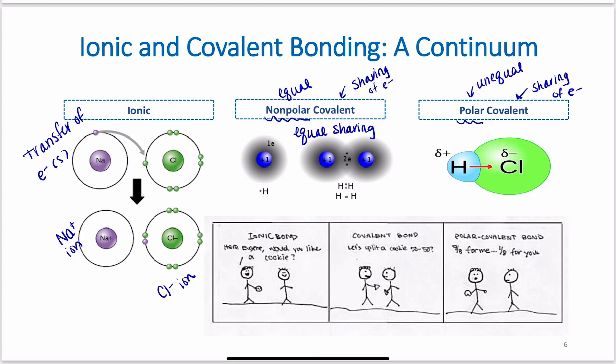We could have non-polar covalent. Non-polar covalent is equal sharing. Non-polar means equal. Covalent means sharing. And polar covalent is unequal sharing of electrons. In the case of H2, the diatomic, they equally share their electrons. There's no reason for them not to. They have the same pull on the electrons. But if I have something like HCl, it is a molecular compound. They are sharing electrons, but they're not sharing them nicely. Chlorine is pulling the electron density more towards itself. So an unequal sharing of electrons. The chlorine is more electronegative than the hydrogen atom, so it's able to pull the electron density towards itself. And so as the cartoon shows here in an ionic bond, 'Hey Eugene, would you like a cookie?' Just gives away the cookie. Covalent bond, 'let's split a cookie 50-50.' Polar covalent bond, '7 eighths for me, 1 eighth for you.' An unequal sharing.